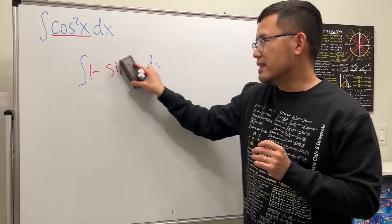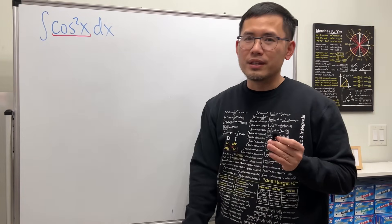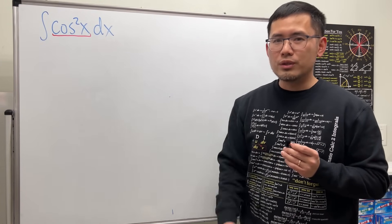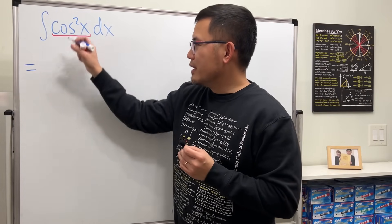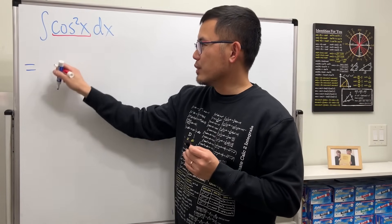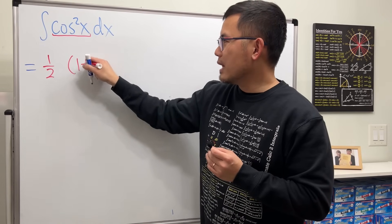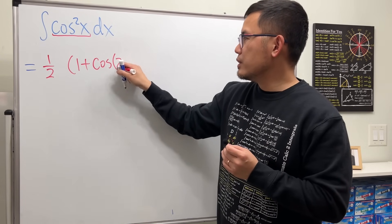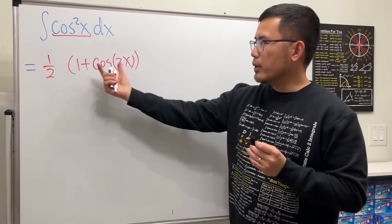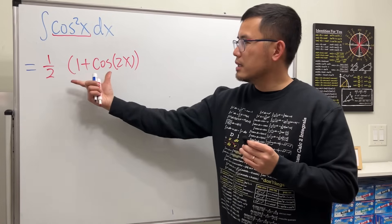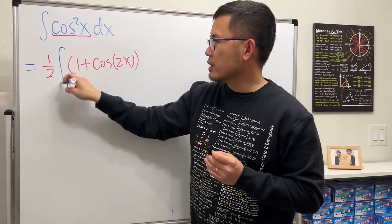There's another identity for cosine squared — the double angle identity, also known as the power reduction identity. Cosine squared x is equal to one half times (1 plus cosine of 2x). This is pretty much the result from the double angle identity. This equals just the cosine — we haven't done the integral yet.